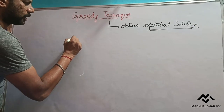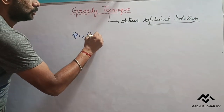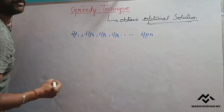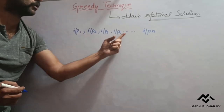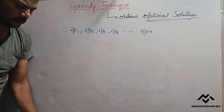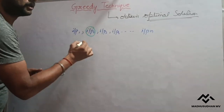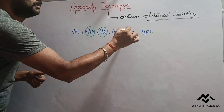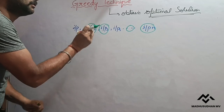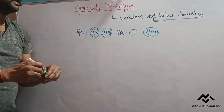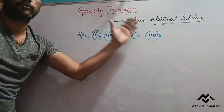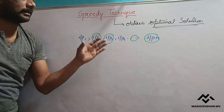Assume we are having some inputs: input one, input two, input three, input four, up to input n. Out of these, we need to select only a few of them — for example, input two and input three. For such types of problems, where we have many inputs and we need to select a few of them, we apply the greedy technique.